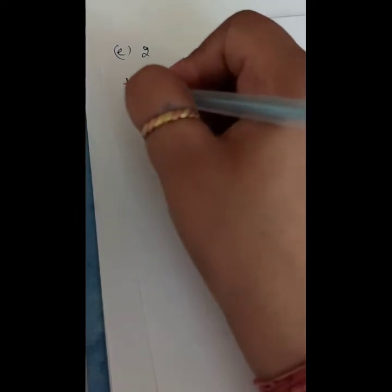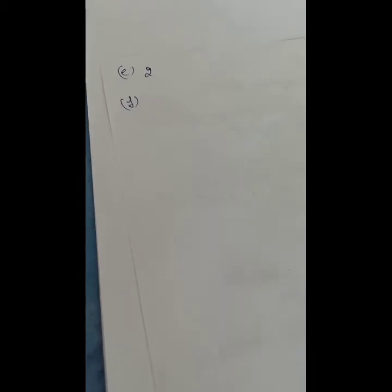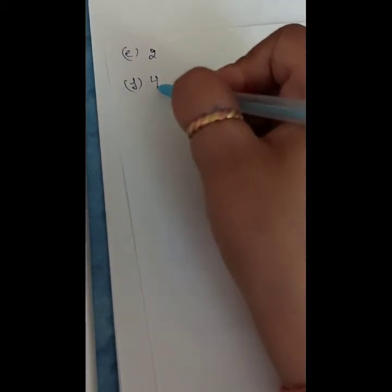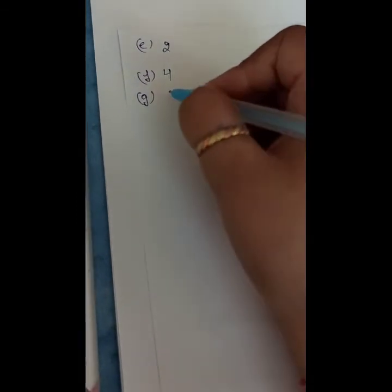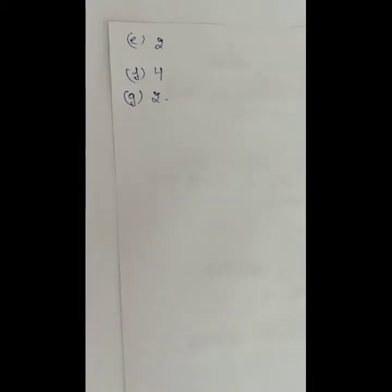The only even prime number is 2. The least composite number is 4, because 1 is neither prime nor composite, 2 is prime, 3 is also prime, so 4 is the least composite number. Two prime numbers that differ by 2 are called twin primes.